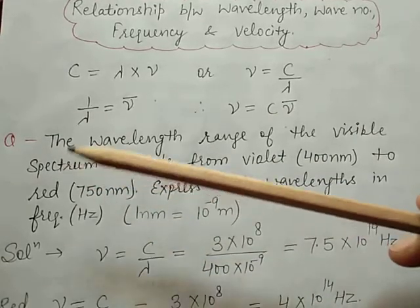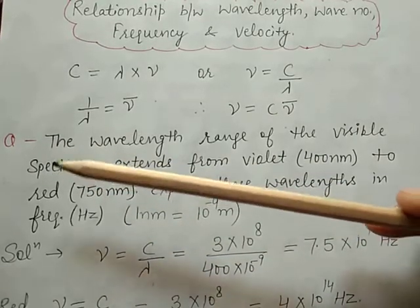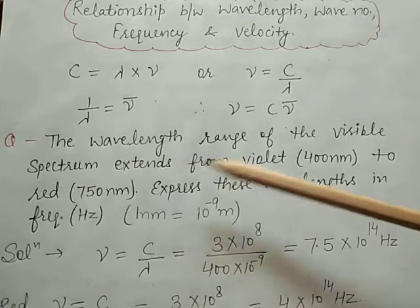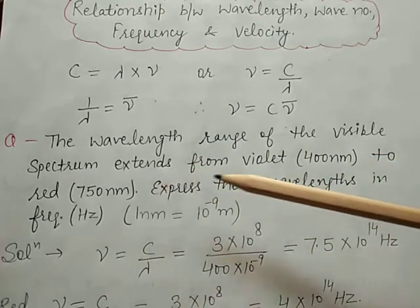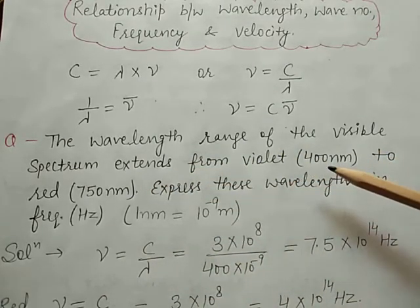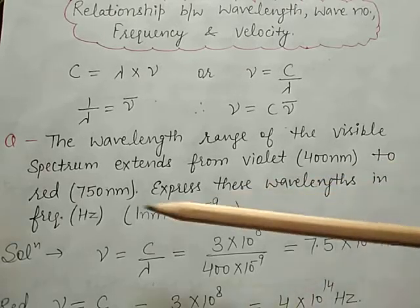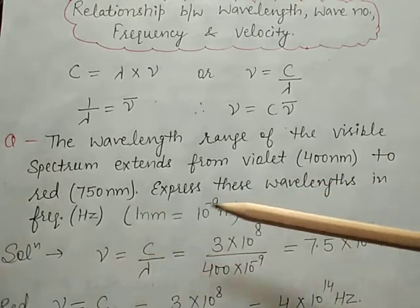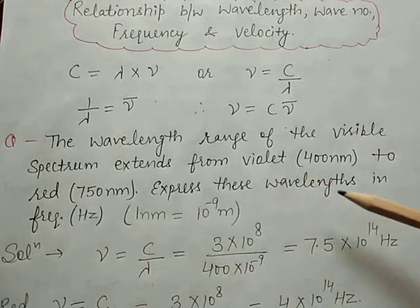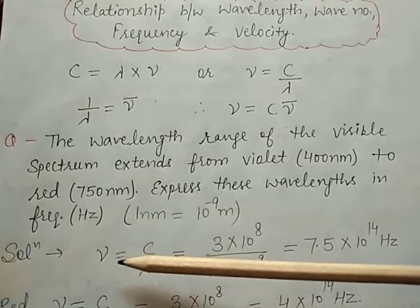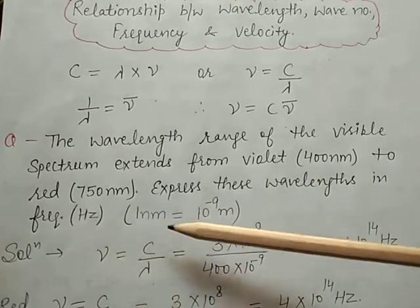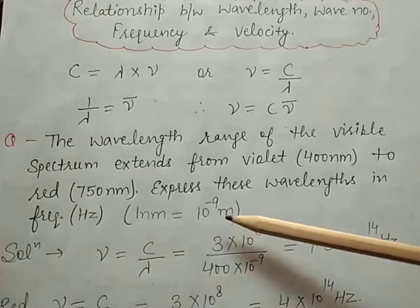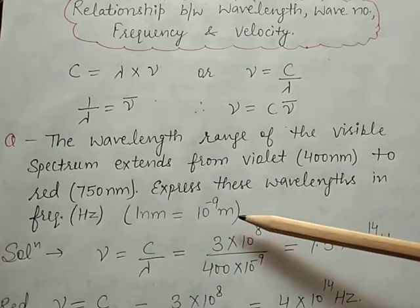Now, numerical problems. The wavelength range of the visible spectrum extends from violet at 400 nanometers to red at 750 nanometers. Express this wavelength in frequency, that is in hertz. Note that 1 nanometer is equal to 10 to the power minus 9 meters.